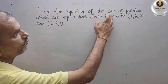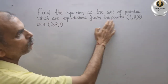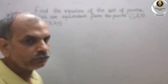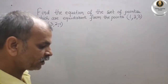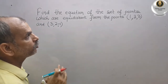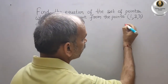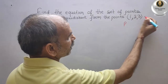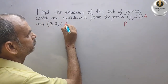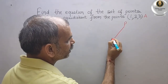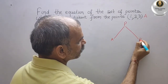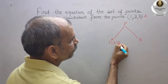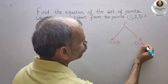The question is: find the equation of the set of points which are equidistant from the points (1, 2, 3) and (3, 2, -1). First, we will understand what they have told. We take point A with coordinates (1, 2, 3) and point B with coordinates (3, 2, -1).